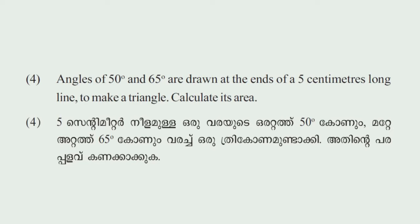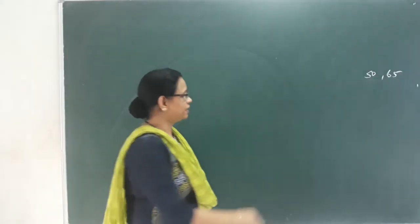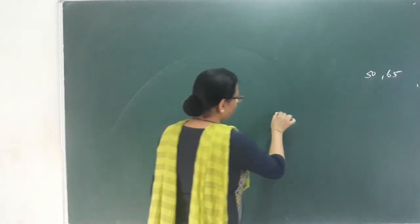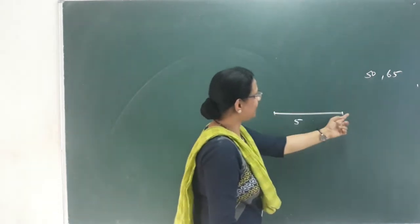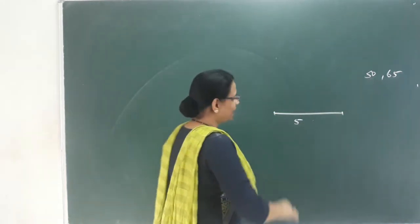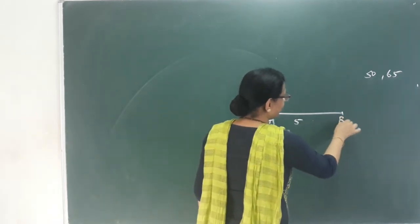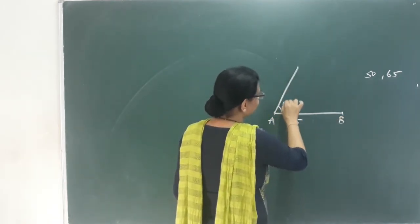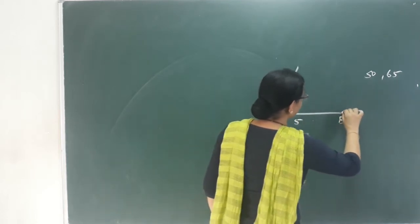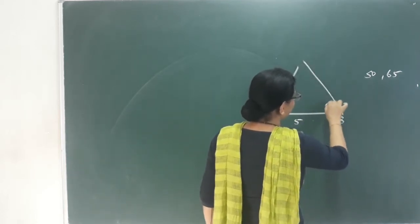Angles of 50° and 65° are drawn at the ends of a 5cm long line to make a triangle. Calculate its area. You have a side of five centimeters. This angle is 65 degrees and this angle is 50 degrees.